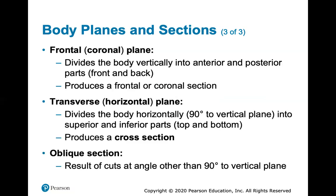A frontal plane divides the body vertically into an anterior and a posterior part — front and back — producing a frontal or coronal section. The transverse or horizontal plane is the easiest to describe: it divides the body horizontally at 90 degrees to the vertical plane into a top and bottom part. Think of a magician sawing someone in half — that's a transverse plane cut — which produces a cross-section. An oblique section results from a cut at an angle other than 90 degrees, a diagonal cut through the body.